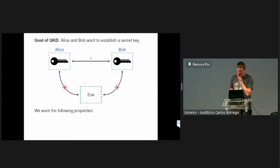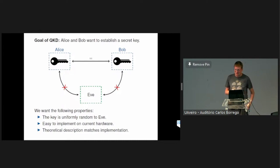And for any good QKD protocol, we would like to have the following properties. First, the key should look uniformly random to Eve, no matter what she does. The protocol should be fairly straightforward to implement using currently available technology. And lastly, we want that the theoretical description of the protocol should match the actual implementation because there have been lots of loopholes where if there's a mismatch, this can be exploited by a potential adversary.